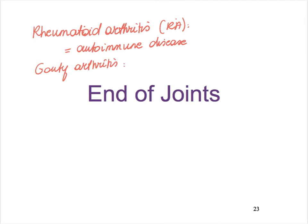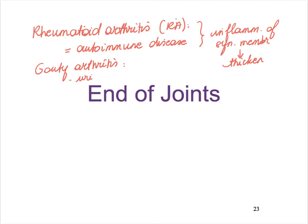Gout is more prominent in males than in females. In rheumatoid arthritis, we see inflammation of the synovial membrane, which causes the membrane to thicken and therefore makes it very difficult for the bones to move properly. In gouty arthritis, uric acid crystals deposit inside particular joints—especially the big toe joint.